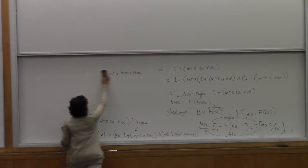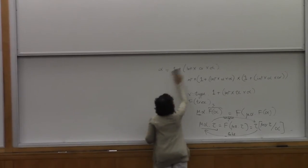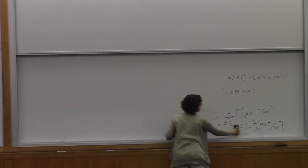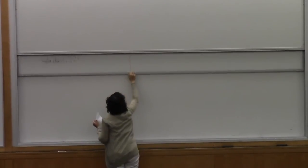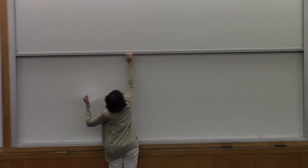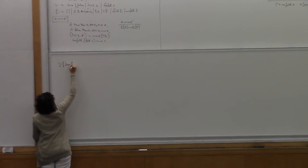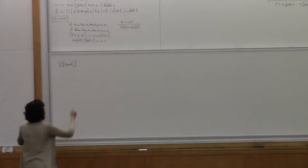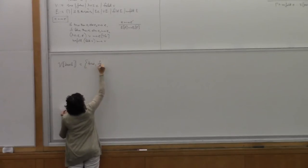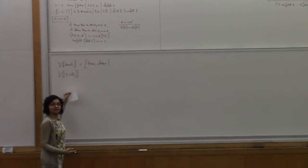We're going to set up a unary logical relation very much like yesterday — the value interpretation of types and then the term interpretation. The new type we've added is mu alpha tau, so that's where the interesting thing will happen. Starting with Bool, the values that belong to type Bool are true and false. For functions, what are the values belonging to the value interpretation of type tau1 arrow tau2?